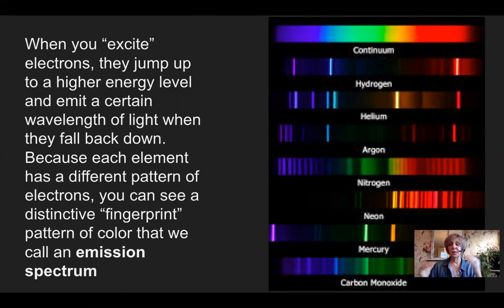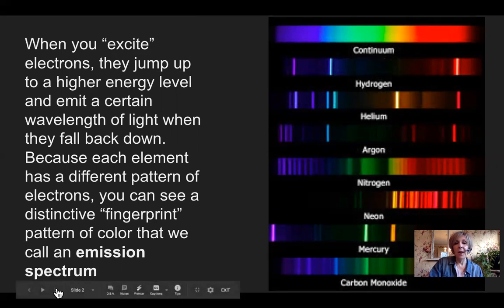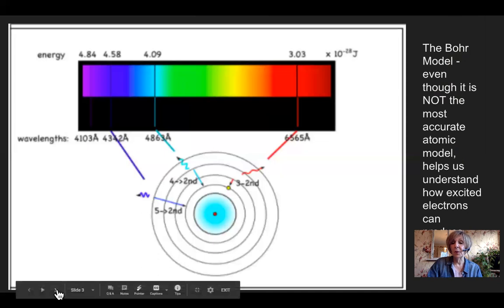And because the electrons are all different in different atoms and different elements and compounds, they make a very distinctive pattern that we call an emission spectrum. And we can use that to identify what type of chemical substance we're looking at.